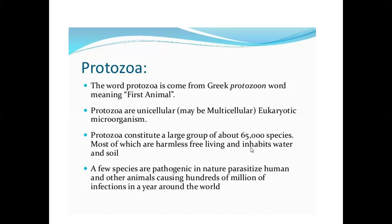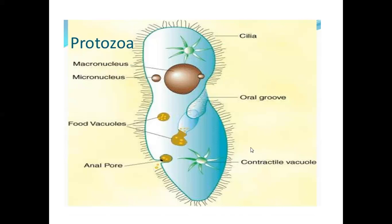A few species are pathogenic in nature, parasitizing humans and other animals, causing hundreds of millions of infections around the world. This is a figure showing the protozoa structure in the paramecium.